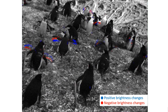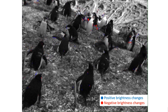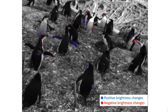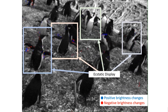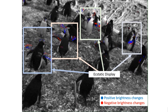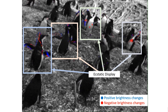An event camera captures pixel-independent brightness changes, here visualized in blue for positive and red for negative changes. It naturally captures motion like the ecstatic display, a unique penguin behavior, which can be seen in the framed examples. A penguin stands upright, points its head upwards, and beats its wings.